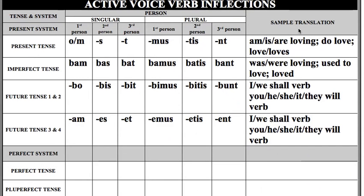I already promised you a song to help you remember the future tense endings. It's a hybrid song — kind of to the tune of 'This Old Man, He Played One' with a knick-knack paddywhack. There are two verses. Verse one: bo, bis, bit, bimus, bitis, bunt — future tense for one and two with a knick-knack paddywhack, get yourself an A, learn these endings right away.